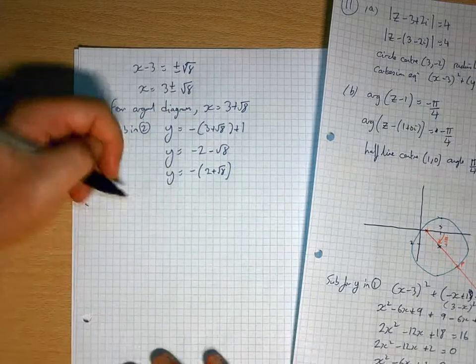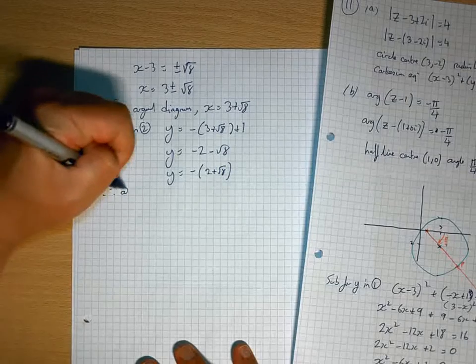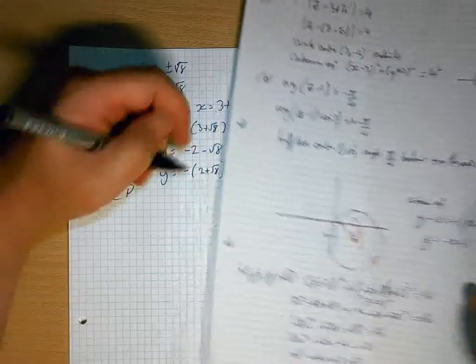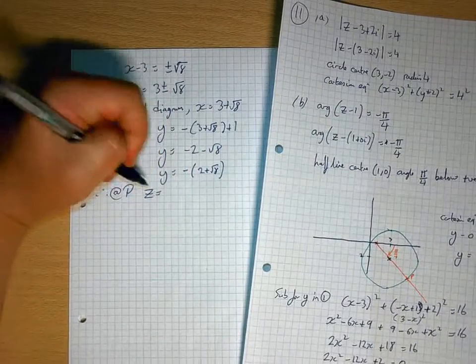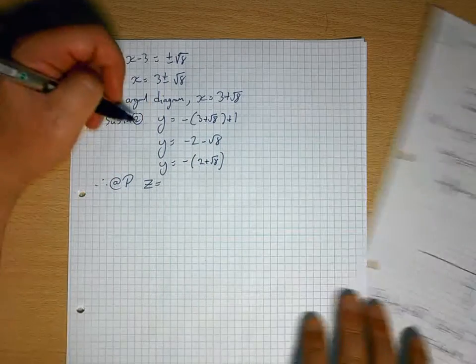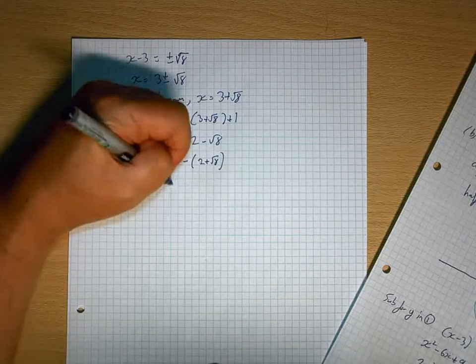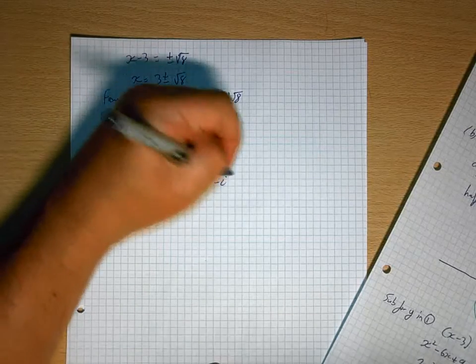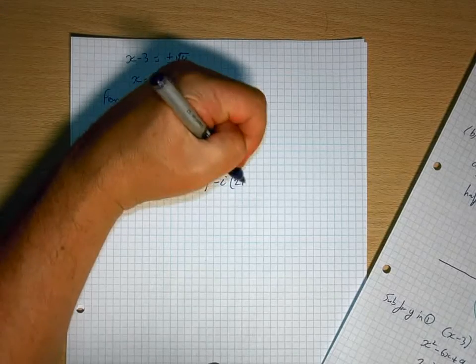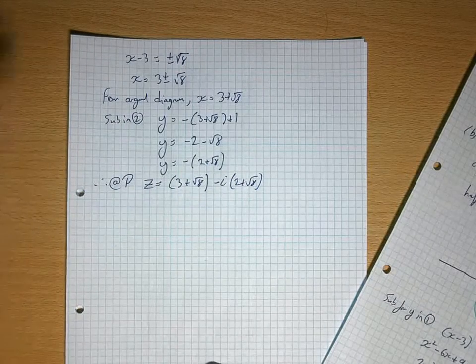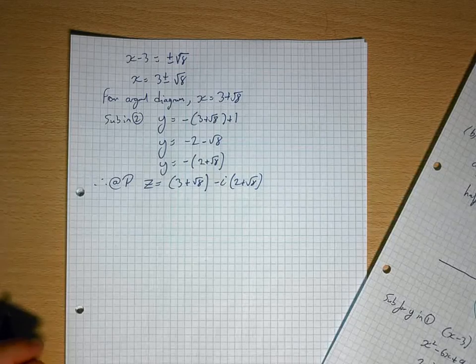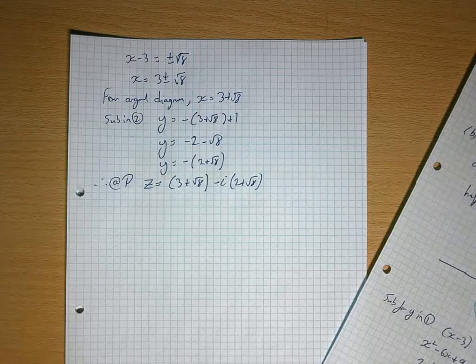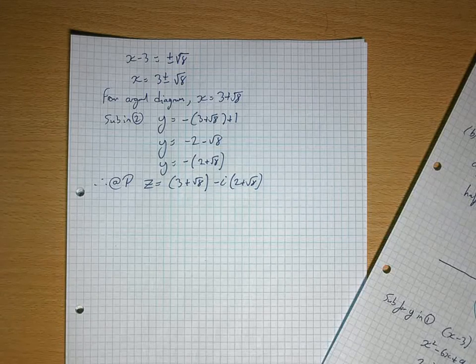So my complex number at P there is going to be z equals x is 3 plus root 8 minus i times 2 plus root 8. Which looks awful, but is the right answer. So there you go.